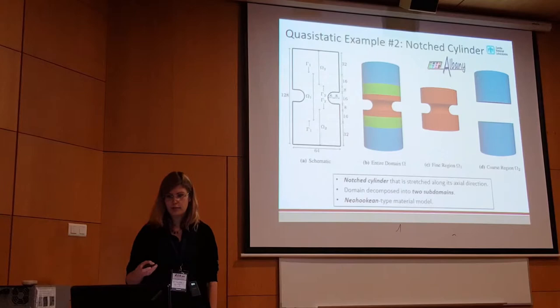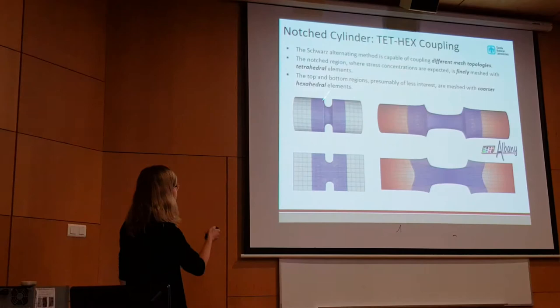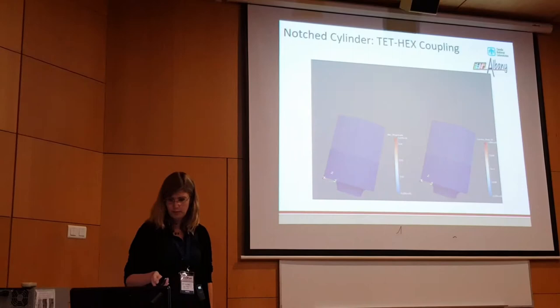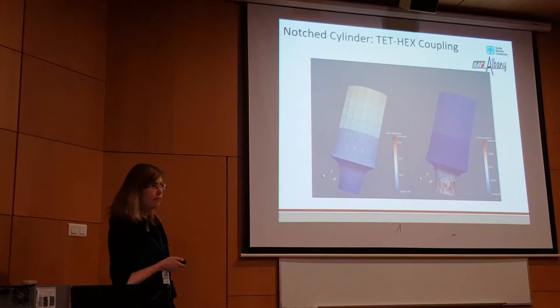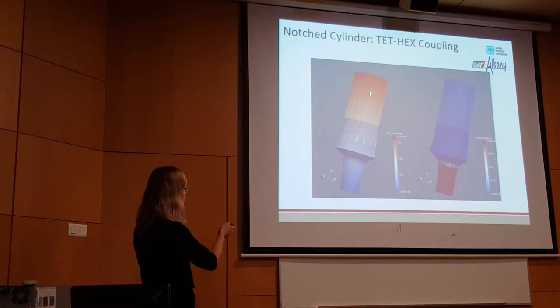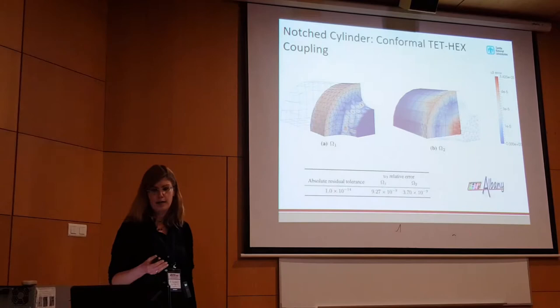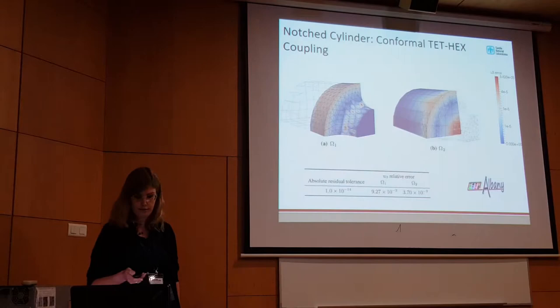The next example is a more sophisticated notch cylinder. We pull it from both sides and it stretches. Naturally, you'd want a fine mesh in the middle near the notch and a coarse mesh away from it. Here we're testing different element types — tets in the middle and hexes away from the middle. A movie shows the solution: displacement magnitude on the left, a Cauchy stress component on the right. You get a nice smooth transition and propagation of the solution from one domain onto the other. Errors are about 0.1%, and those errors are actually not due to the coupling.